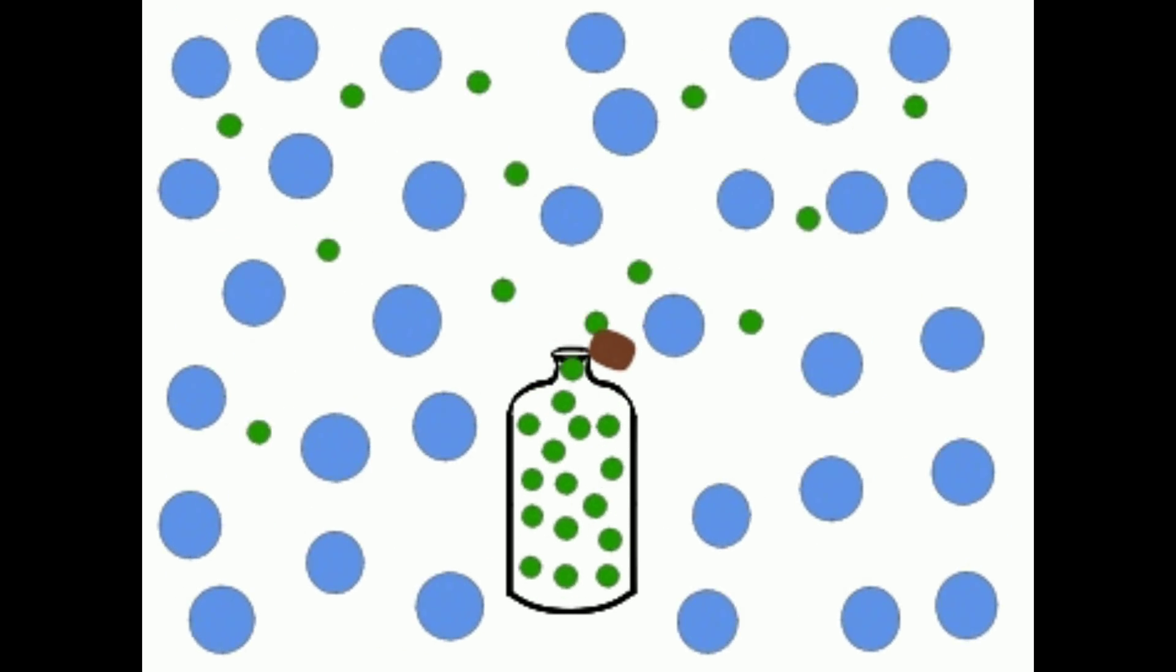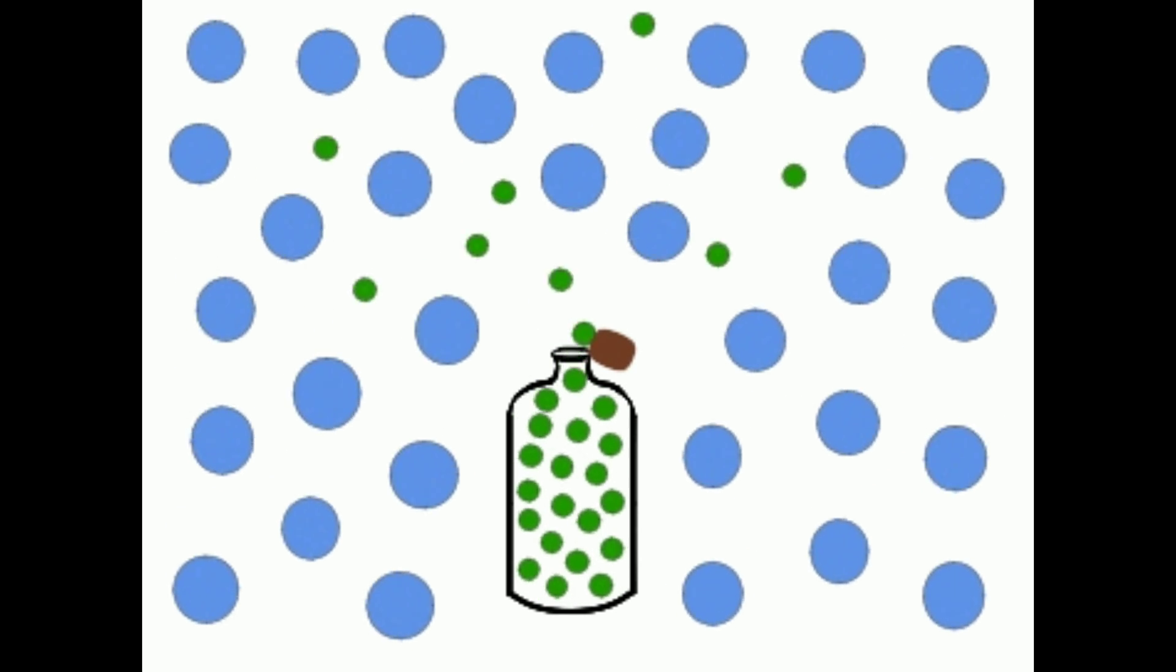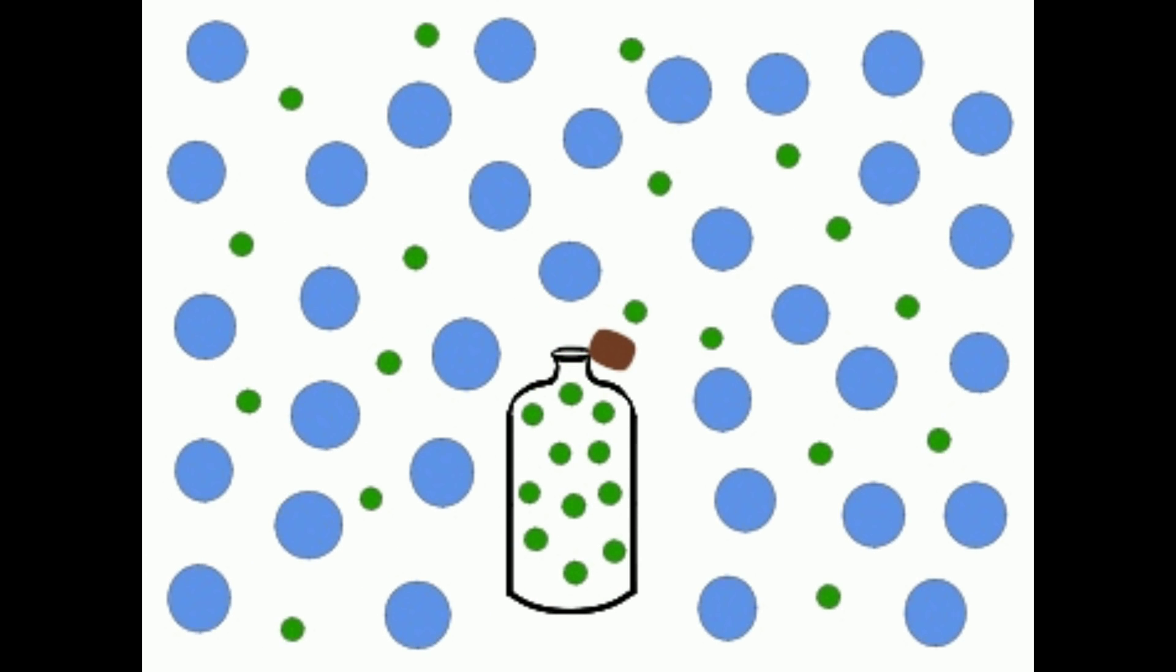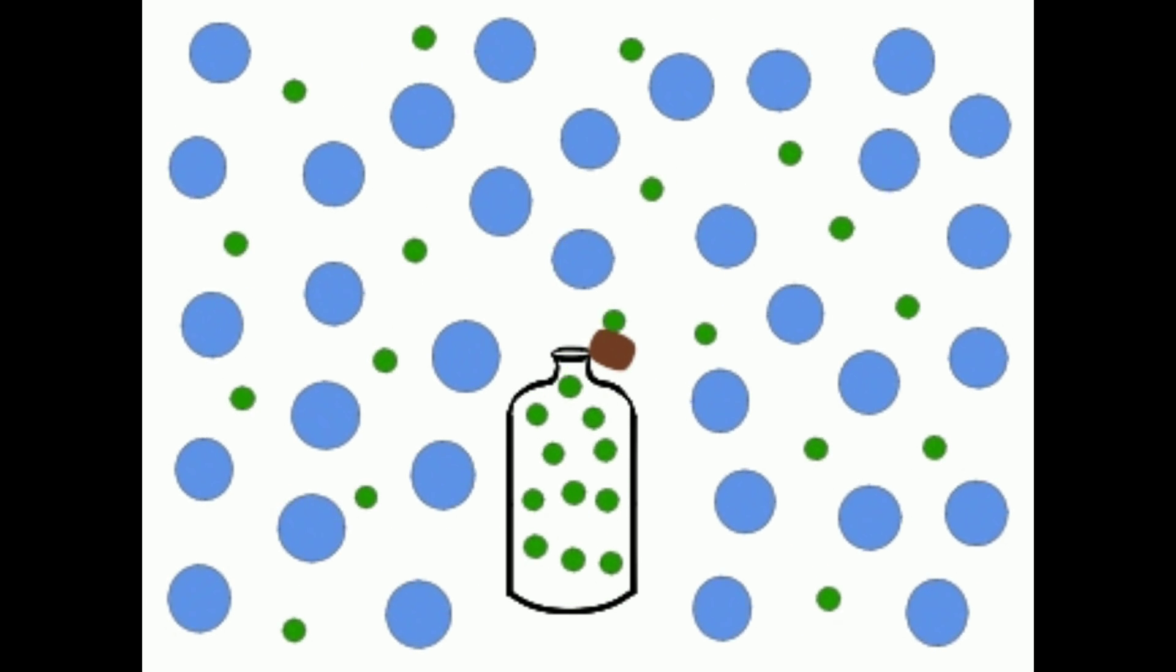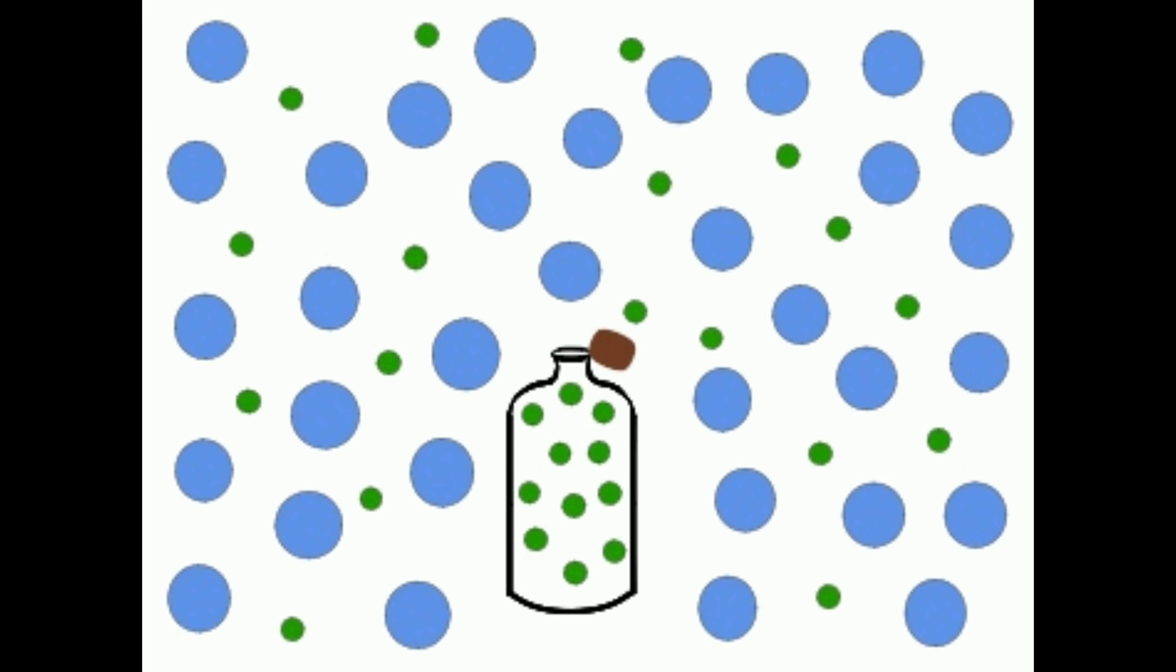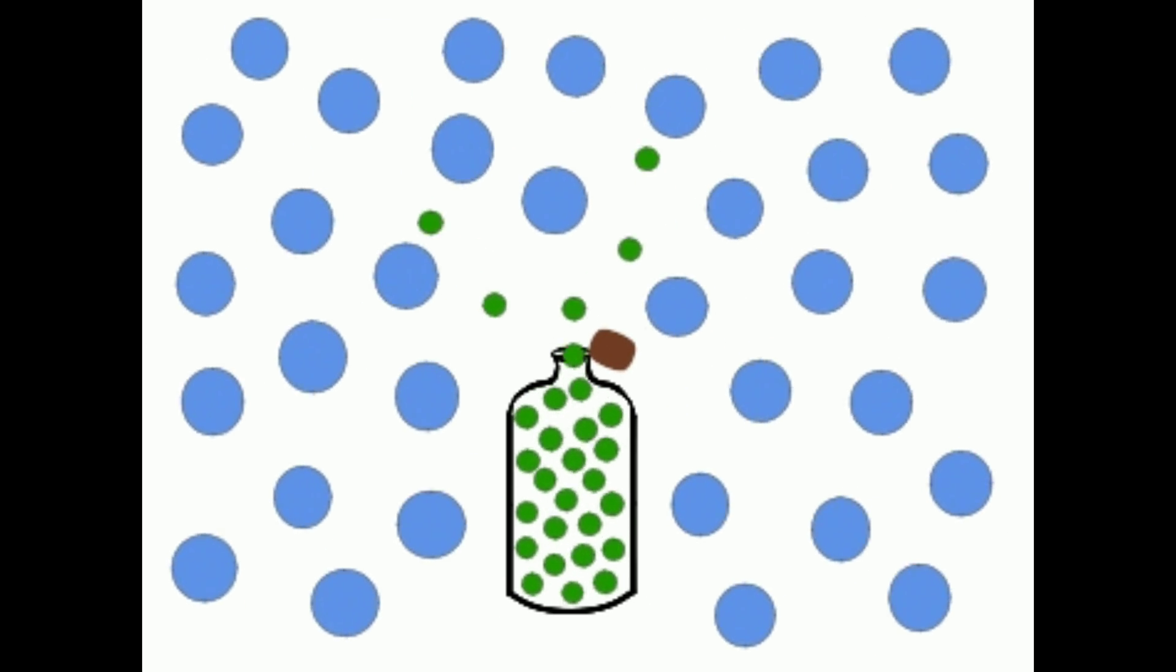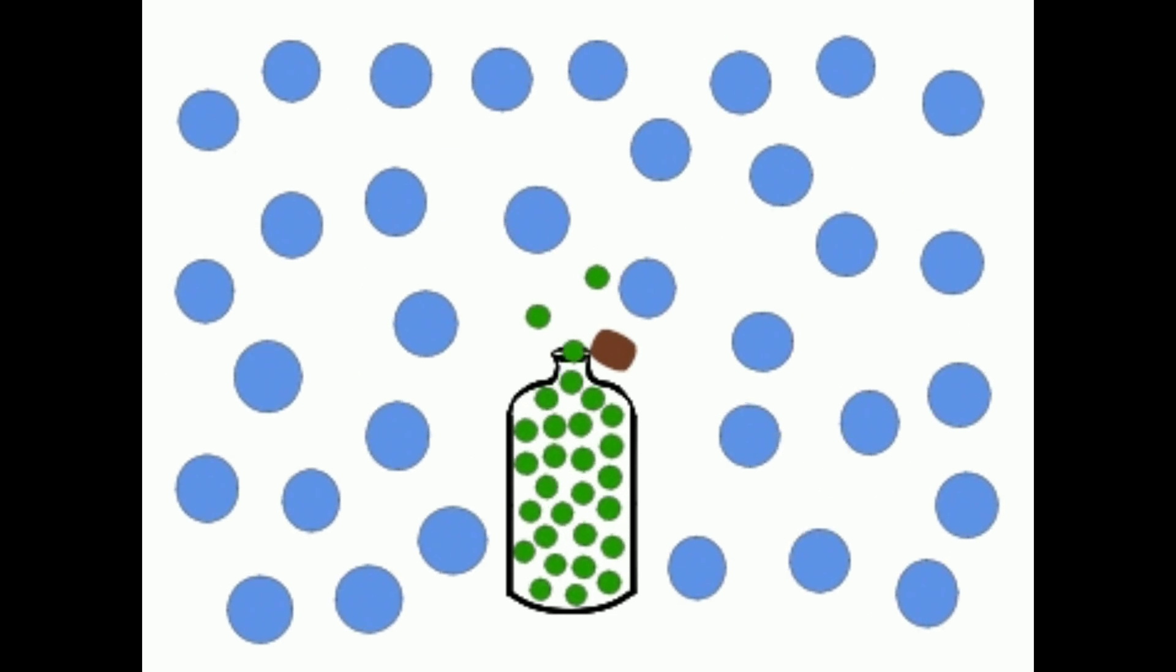Notice here how the green gas particles completely diffuse out of the unstoppered bottle. They diffuse until their concentration is evenly distributed throughout the blue particles. The green particles are moving and not attracted to one another at all.